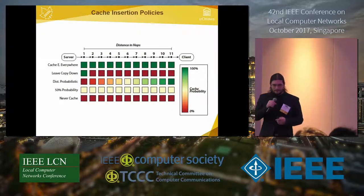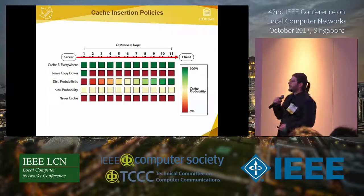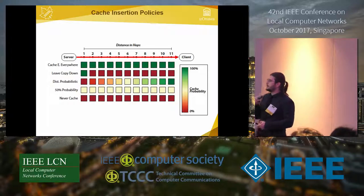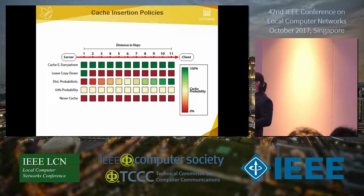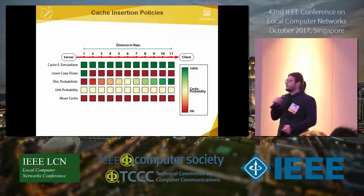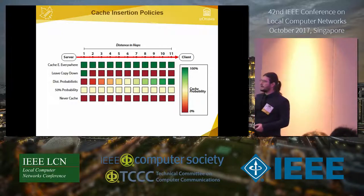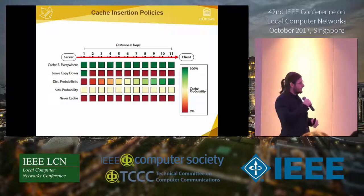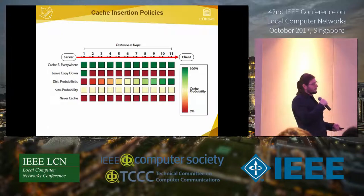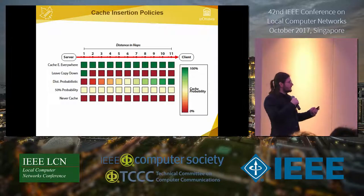Looking at implicit policies applicable to ICN: there is cache-everything-everywhere, where content is always cached; leave-copy-down, which leaves a copy one step from the content producer; distributed probabilistic, which places content closer to the requester; relative probability; and never-cache. The issue is that cache copy distribution is asymmetrical, with no correlation to content request locations — not efficient for optimizing cache placement.